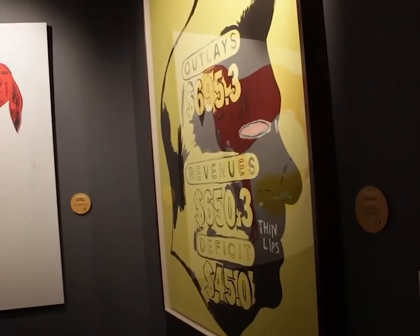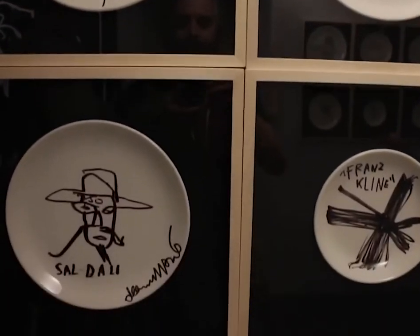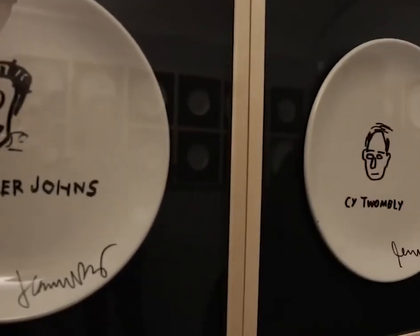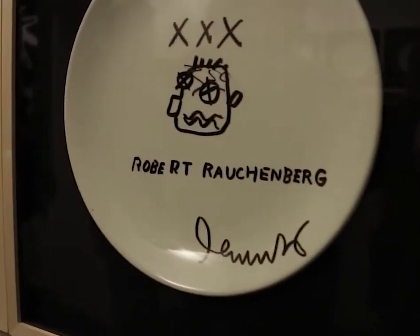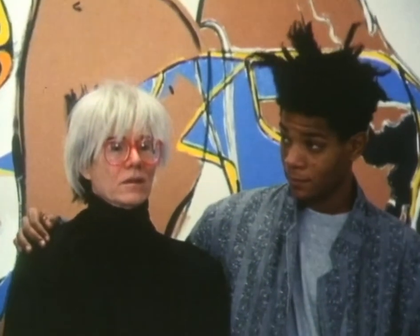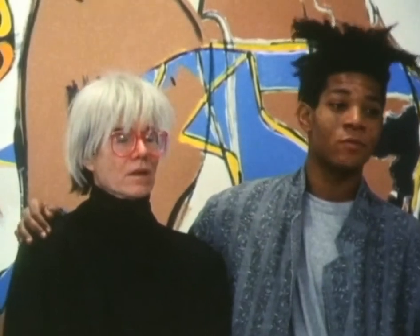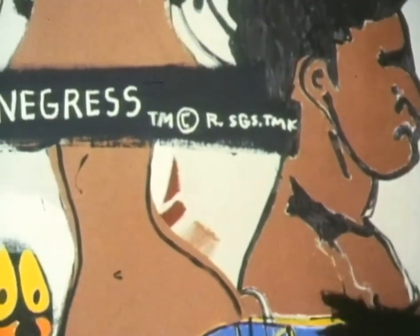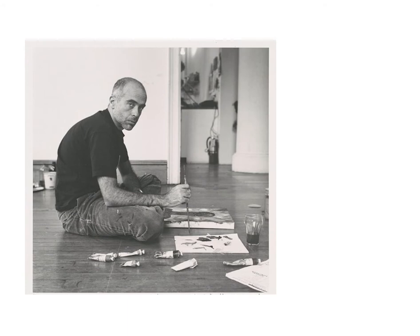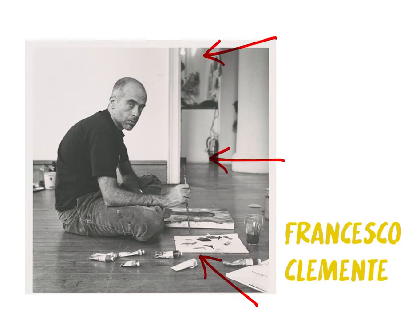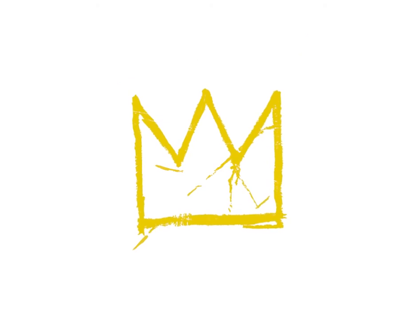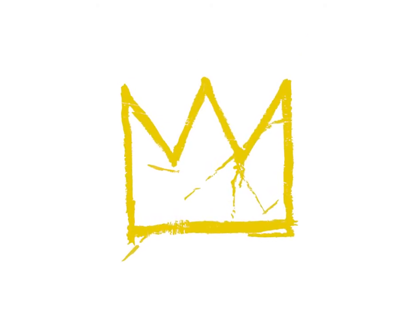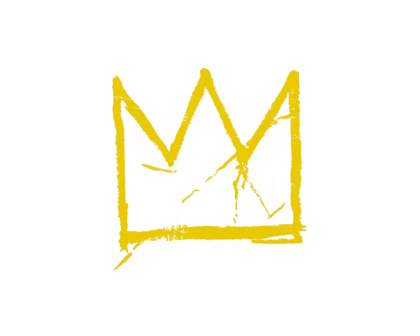Basquiat's heroes include artists, writers, groundbreaking athletes, and musicians. To some extent, Basquiat used the crown to depict himself as a king, to acknowledge the people who influenced or inspired him, and to portray his ambition with force. As Francesco Clemente said, Jean-Michel's crown has three peaks for his three royal lineages: the poet, the musician, and the boxing champion.